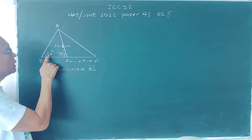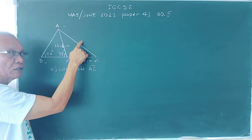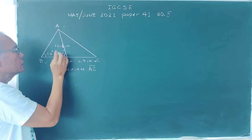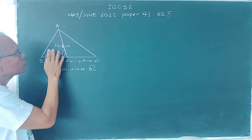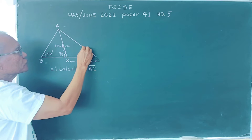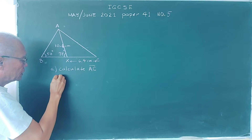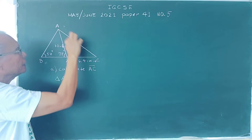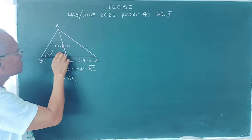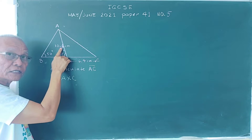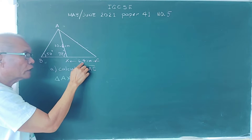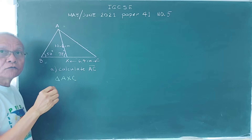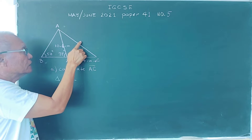For the big triangle ABC, we have 58 degrees but an unknown side and unknown angle, so we cannot use the law of sines or cosines directly for it. Instead, let's use the smaller triangle AXC. In this triangle, we have side AX = 10.6 and side XC = 6.4, so two sides are known, which suggests the law of cosines.